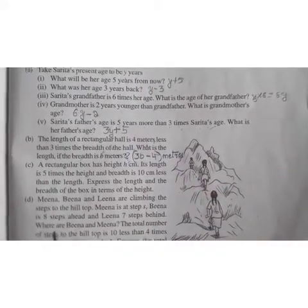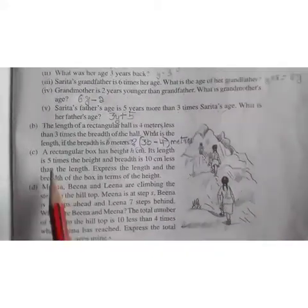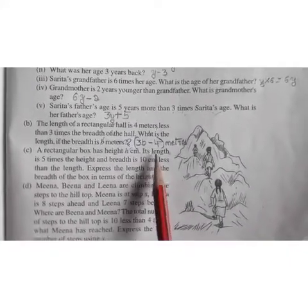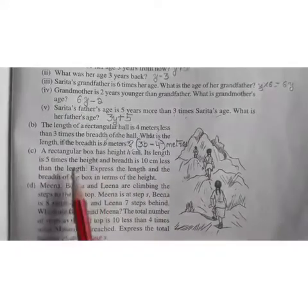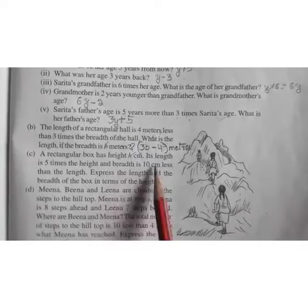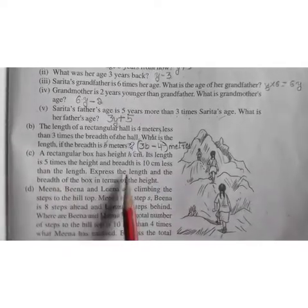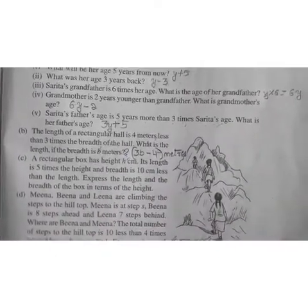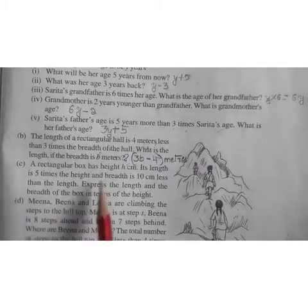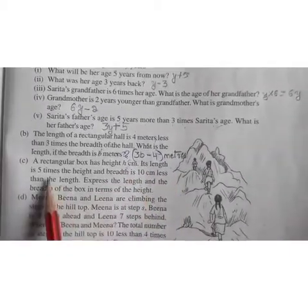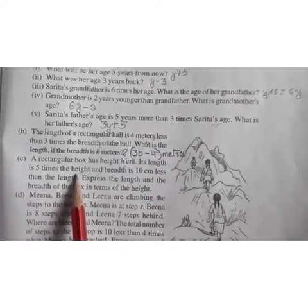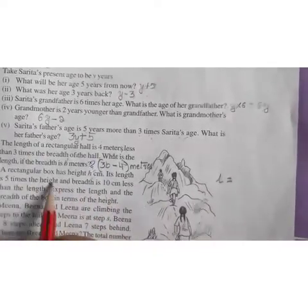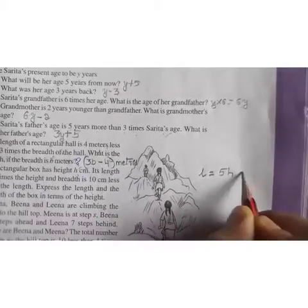Is it understood children? Concentrate properly. Question number C. A rectangular box has height H centimeters. Its length is 5 times the height, and breadth is 10 centimeters less than the length. Express the length and the breadth of the box in terms of height. So children, what they have given? The height of the rectangular box is H. And its length is 5 times the height. So length will be 5 times height, so it will be 5H centimeters.